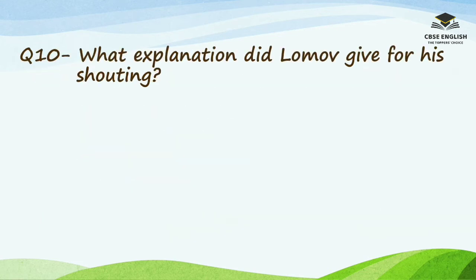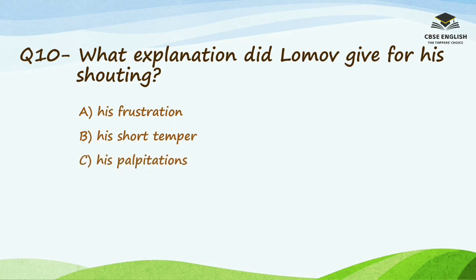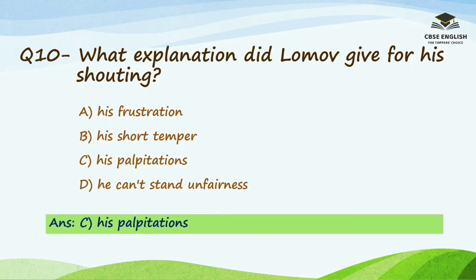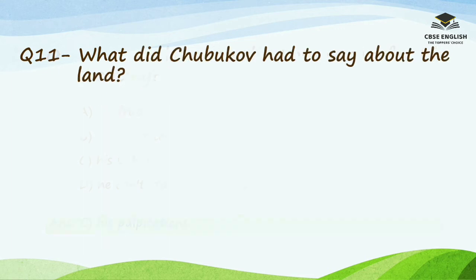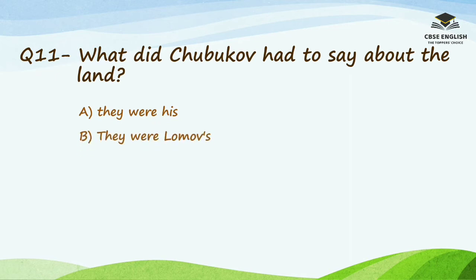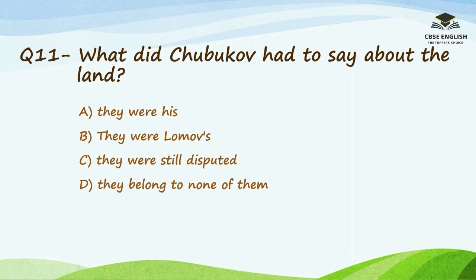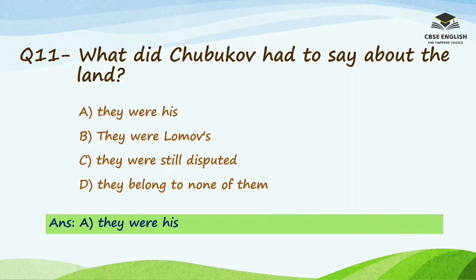Question number 10: What explanation did Lomo give for his shouting? Options are his frustration, his short temper, his palpitations, or he can't stand unfairness. The right option is his palpitations. Question number 11: What did Chubukov have to say about the land? Options are they were his, they were Lomo's, they were still disputed, or they belonged to none of them. The right option is they were his.